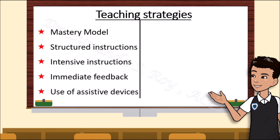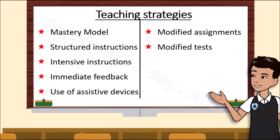There are many assistive devices which can be used to help such students. Ishan finds it easy to understand concepts if shown videos rather than reading about them. He uses word processors that help him with spellings and audio books to understand and learn. The teacher gives him modified assignments where, unlike his classmates, Ishan can present his work orally or in the form of graphic organizers or mind maps. His teacher also modifies his tests — questions are asked orally and he is given extra time to complete them.